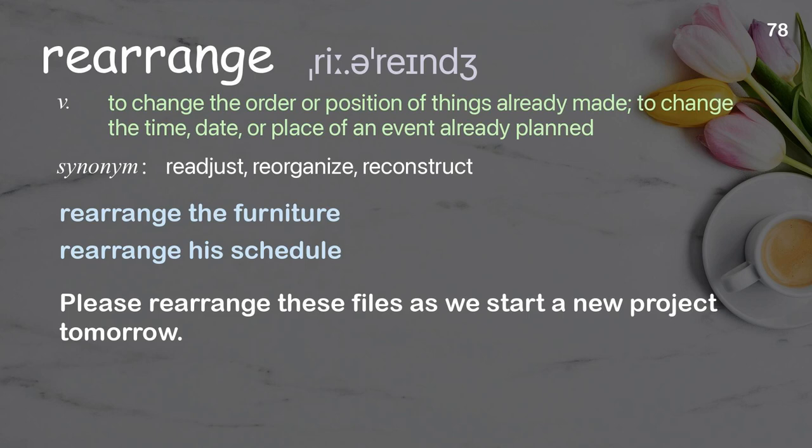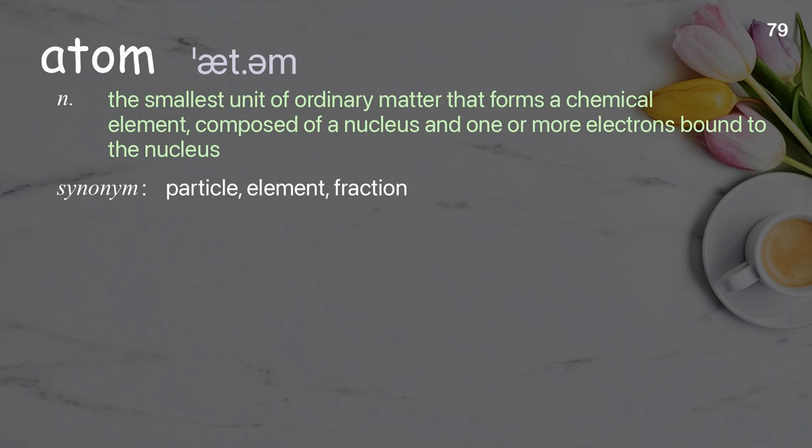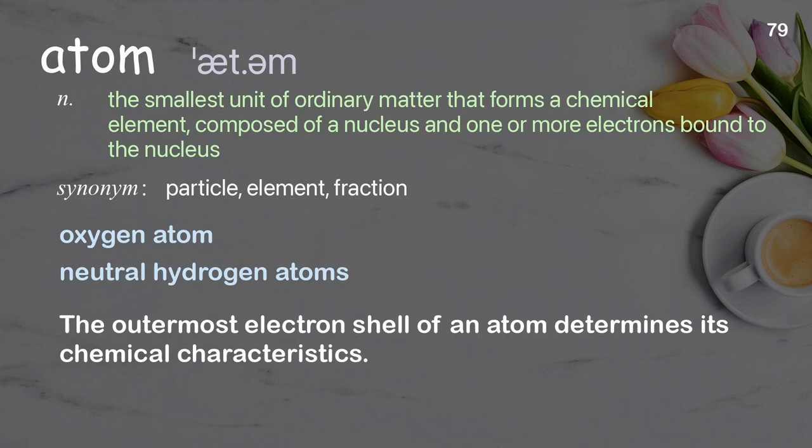Atom: the smallest unit of ordinary matter that forms a chemical element, composed of a nucleus and one or more electrons bound to the nucleus. A human shell of an atom determines its chemical characteristics.